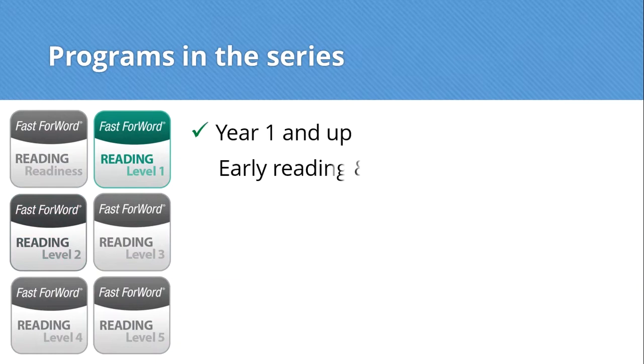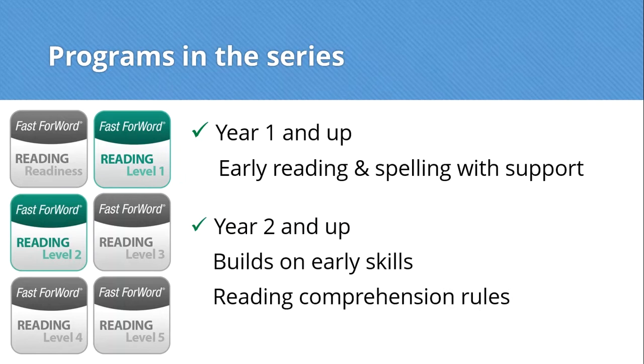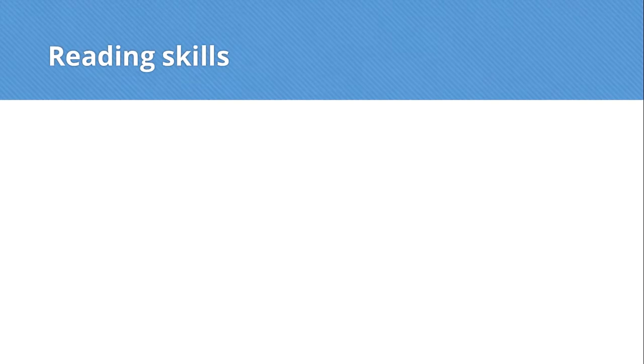The Reading 1 program is suitable for students in Year 1 and above who are beginning readers and supports the early reader to begin to read independently. The Reading 2 program is suitable for students in Year 2 and above who are emerging readers. This program builds on the early reading and spelling skills addressed in Reading 1 and supports students to begin to understand reading comprehension rules.